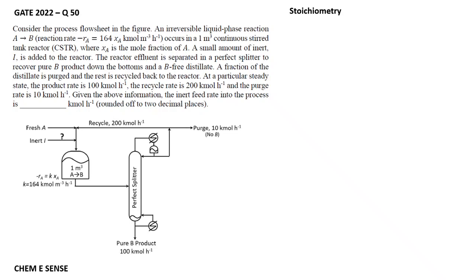Hi, in this video we are solving GATE 2022 chemical engineering paper, question number 15. In this question, the process is defined and there is a reactor — a CSTR, continuous stirred tank reactor.